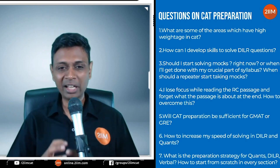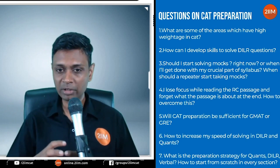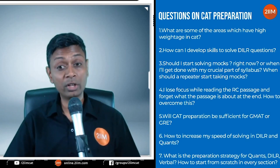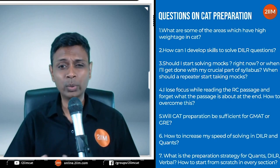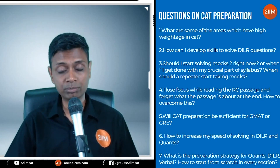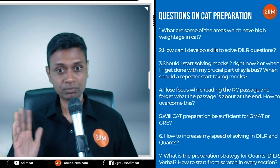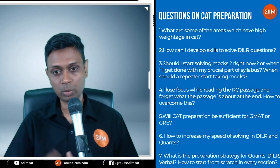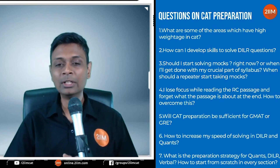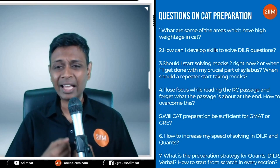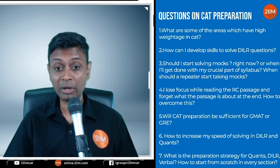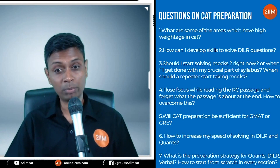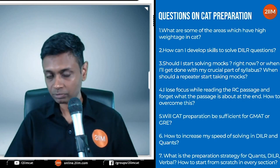If you get the basic arithmetic topics and geometry in the bag, then out of 34 questions, you're covering give or take 22 to 25 questions — probably even more depending on the year. So you've essentially got the entire paper covered if you master basic topics and geometry and allied topics.